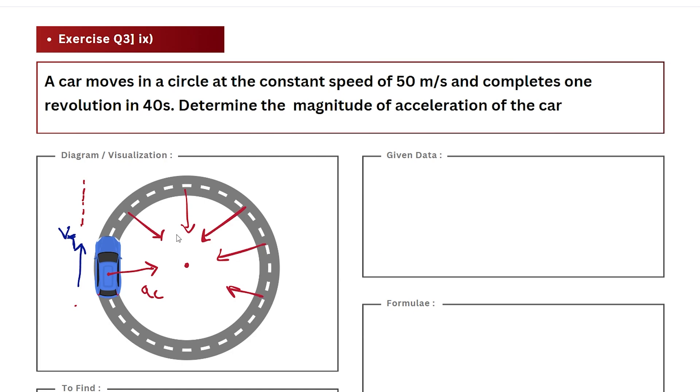So let's start our solving process. First, I'm going to write all the given data. The first statement gives us the speed with which our car is traveling, and that speed is 50 meters per second. The second given value is the time required by the car to complete one revolution, that is the time period, and that time period is 40 seconds.